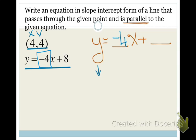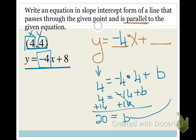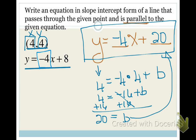I can find b because they've given me an x and a y. So instead of y I'll use 4, my slope is negative 4, and instead of x I'll use 4, then plus b. Solving this gives me 4 equals negative 16 plus b. Adding 16 to both sides, my b value is 20. So I'll put that into my equation. This is the equation of a line parallel to y equals negative 4x plus 8 that passes through the point (4, 4).